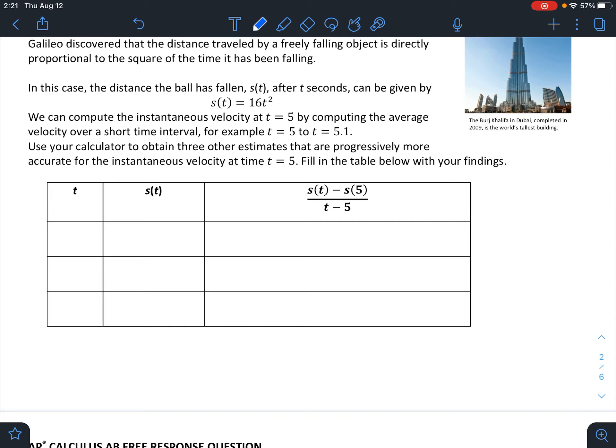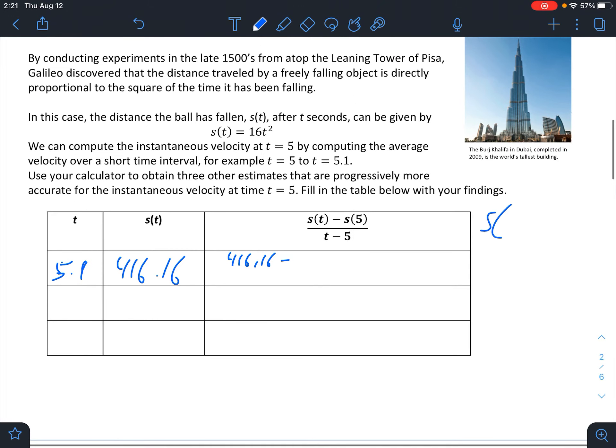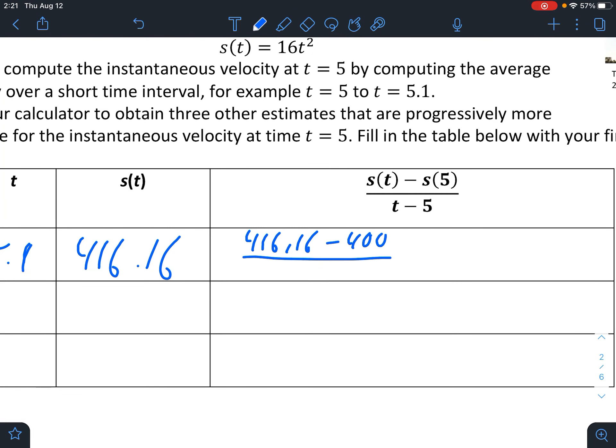We're going to use our calculators to obtain a couple estimates that are progressively more accurate. Then we're going to guess what the instantaneous velocity at t = 5 is. So let's start with t = 5.1. S(5.1), that would be 16 times 5.1 squared, is 416.16. Now we're going to use this formula, which is the average rate of change. So 416.16 minus S(5), and S(5) is 16 times 5 squared, 16 times 25 would be 400. Minus 400 over 5.1 minus 5. If we type that into our calculator...